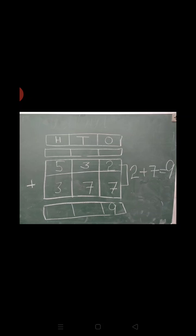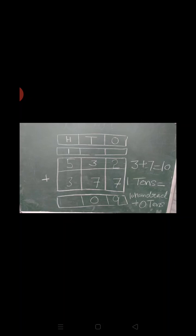Now we are doing one more example of this type of question. We have two numbers: 532 and 377. First of all, we add the ones place digits: 2 plus 7 equals to 9. In the next step, we add the tens digits: 3 plus 7 equals to 10. So I write 0 in the tens place and 1 in the hundreds place, because we know 10 tens equals to 100 plus 0 tens.